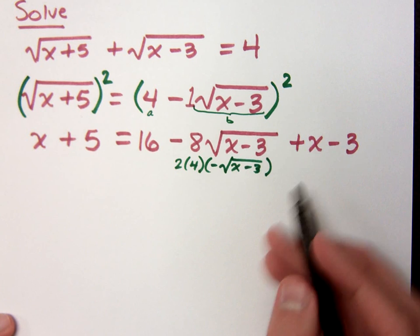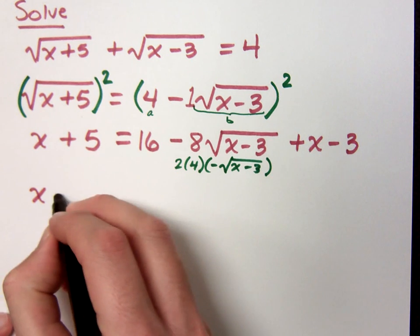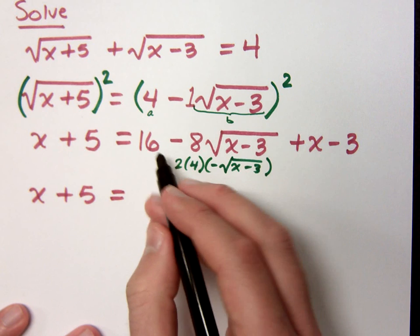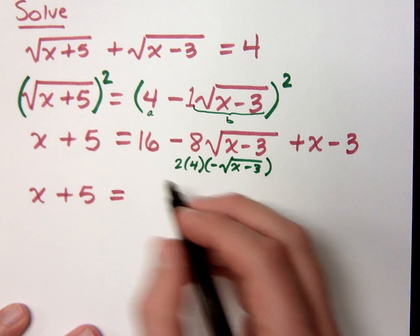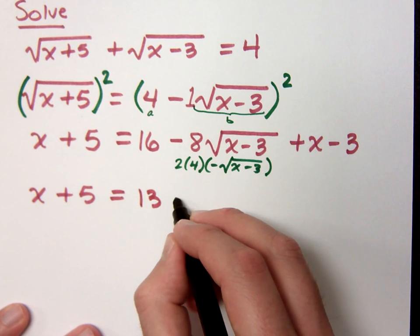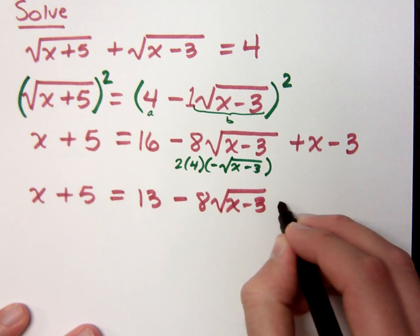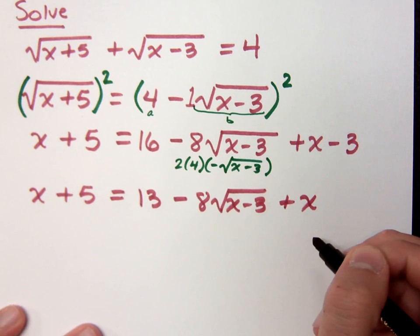Now, in this problem, it might do well for you to go ahead and combine like terms. On the right side, we've got 16 minus 3, so that's 13, minus 8 square roots of x minus 3, plus x.